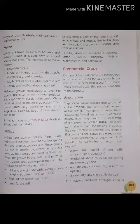Hot and dry climate with temperatures ranging between 20 degrees and 30 degrees Celsius, rainfall not more than 35 centimeters, and less fertile soil. Millets form a part of food crops in Asia, Africa and Russia, but in the USA and Europe they are grown as a fodder crop to feed animals. In India, millets are cultivated in Rajasthan, Uttar Pradesh, Haryana, Gujarat, Maharashtra and Karnataka.